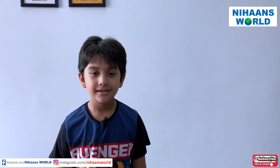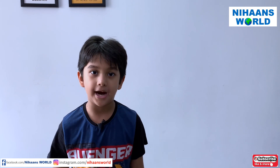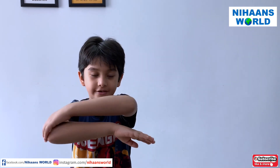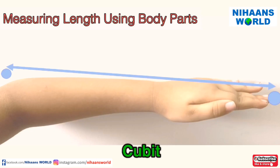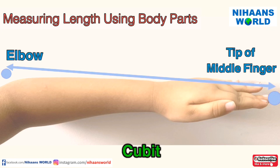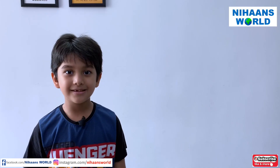Friends, let us see what you mean by cubit. Can you tell me? Cubit is the length from the elbow to the end of the middle finger.